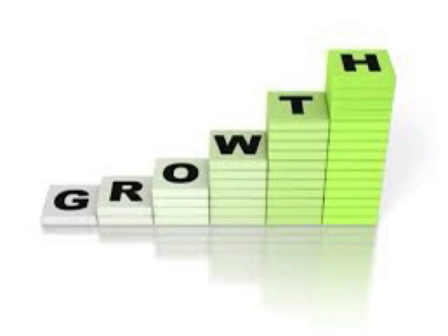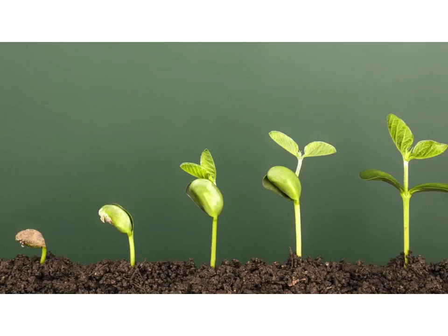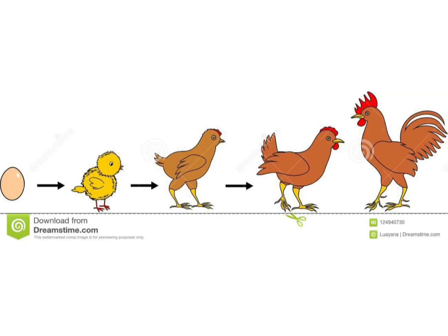The next characteristic of living organisms is growth and development. All living things show growth. Growth is an increase in the size of an organism. For example, a baby grows into a child, then a child into a boy or a girl, and then that boy or girl grows into a man or a woman. Similarly, a seedling grows into a tree, and a chicken grows into a cock or a hen.